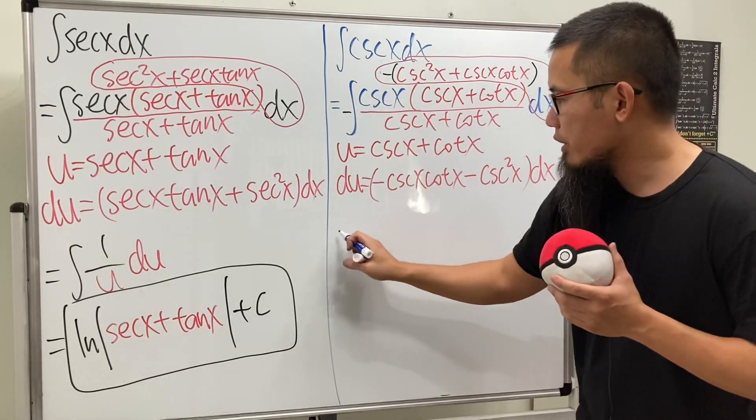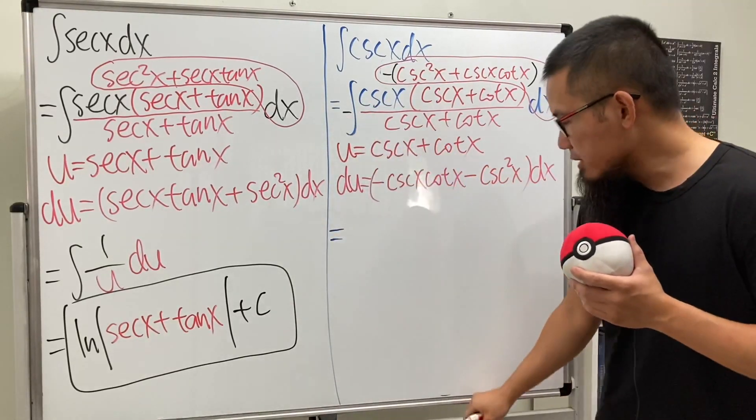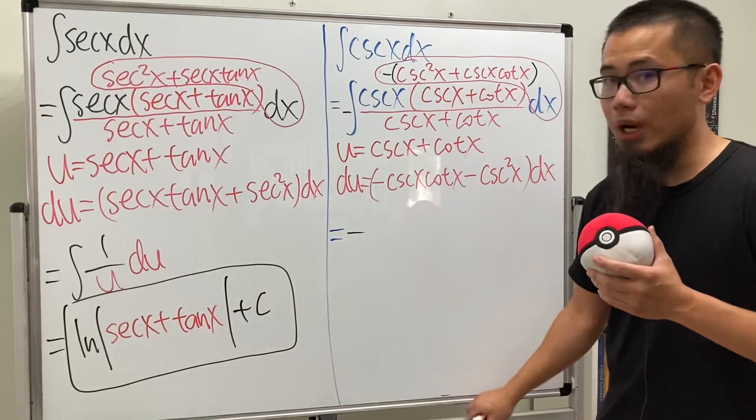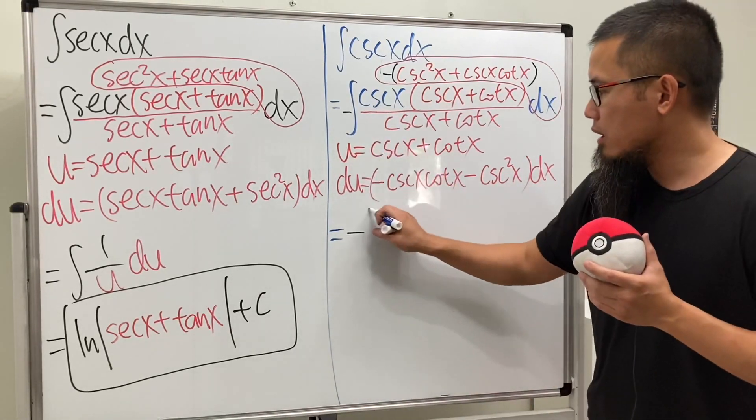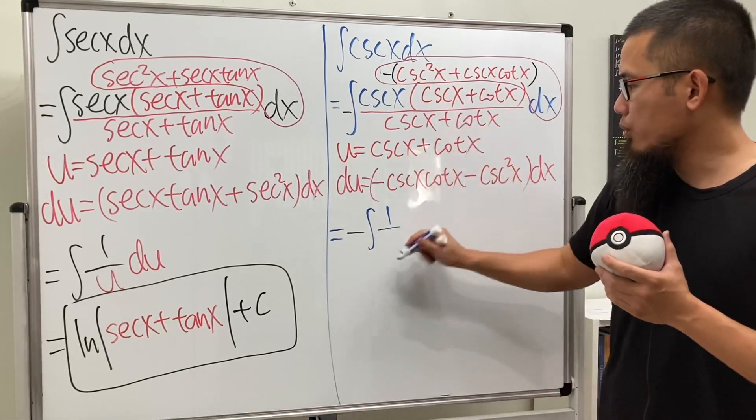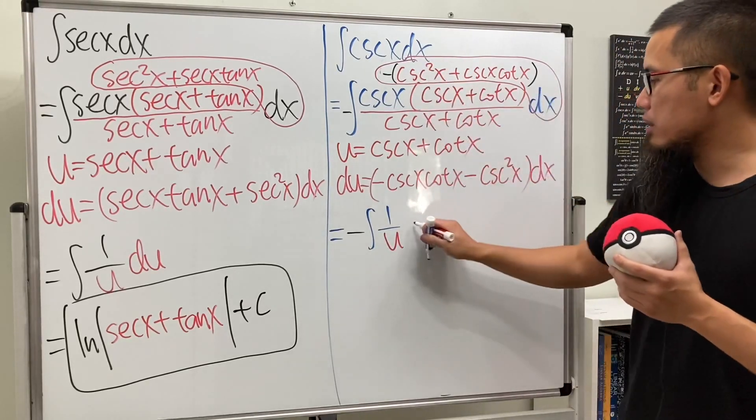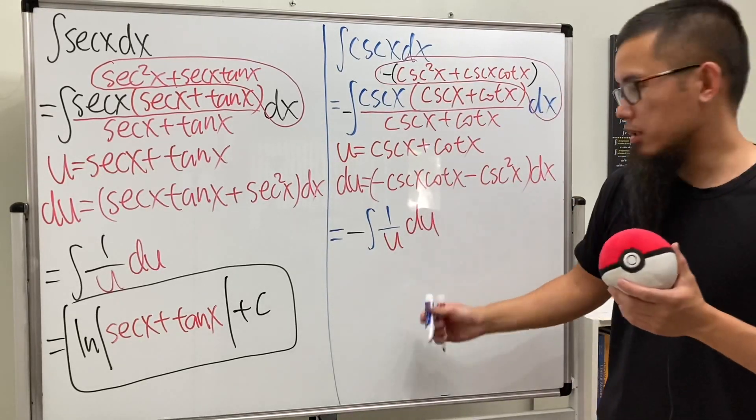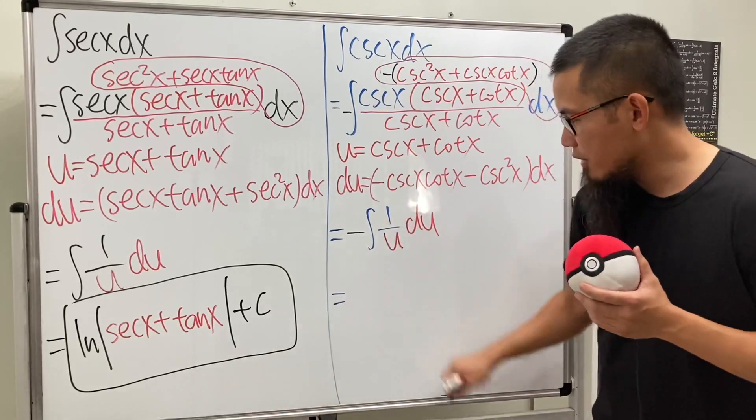And now we'll just continue here. We just have this negative right here, and then we will have to integrate 1 over u, and then this right here is our du. And the difference is that we have a negative right here.